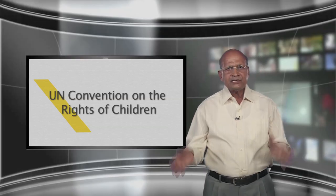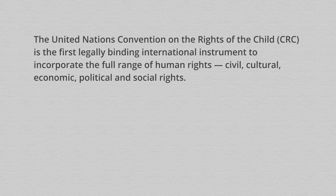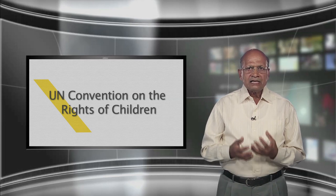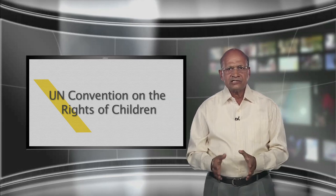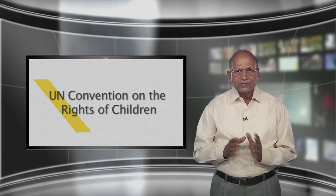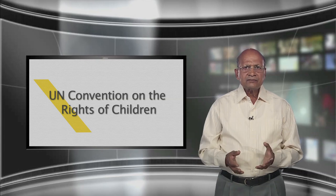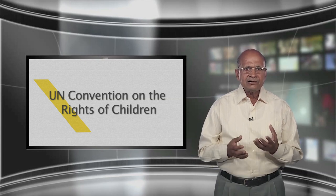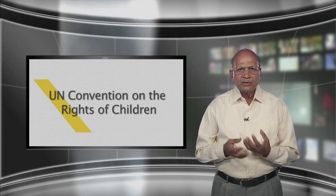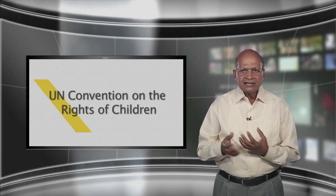UN Convention on the Rights of Children. The United Nations Convention on the Rights of the Child (CRC) is the first legally binding international instrument to incorporate the full range of human rights — civil, cultural, economic, political and social rights. On November 20, 1989, world leaders decided that children needed a special convention just for them, because people under 18 years old often need special care and protection that adults do not. The leaders also wanted to ensure that the world recognized that children have human rights too. All UN members except the United States and Somalia have ratified the Convention on the Rights of the Child.